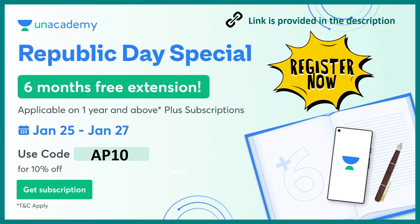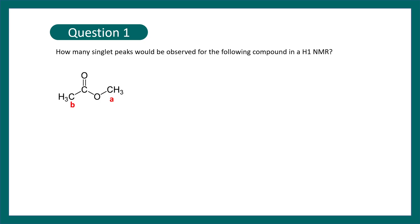You can use my code AP10 to get the usual 10% discount. But along with it, you are going to get a six month extension. That's a lot of money and that's a very nice thing for you guys. So register right now.